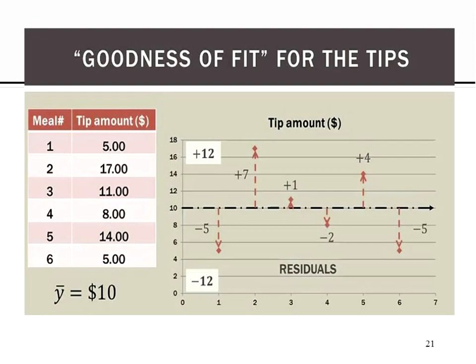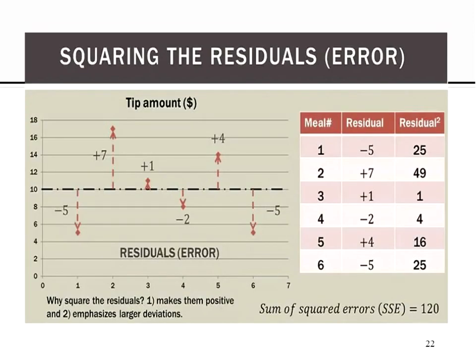What you might notice is that if you add up all of those error values together, you get plus twelve in error and minus twelve in error. Adding those together gives you a total error of zero. We know that's not right because there's clearly error in this model — those data points are not on the line. The error values adding up to zero is misleading, so we understand we need a different technique.